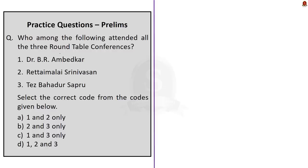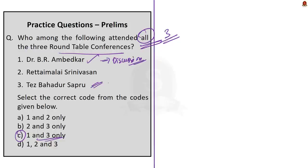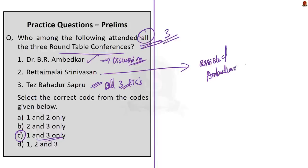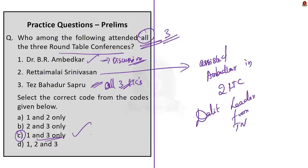The second question asks: who among the following attended all three Round Table Conferences? The three names given are Dr. B. R. Ambedkar, Rettaimalai Srinivasan, and Tej Bahadur Sapru. The answer is option C: one and three only. Dr. B. R. Ambedkar attended all three, as we just saw in the discussion. Tej Bahadur Sapru also attended all three conferences. Rettaimalai Srinivasan, an important Dalit leader from Tamil Nadu, assisted Dr. B. R. Ambedkar in the first two Round Table Conferences only. The answer is option C: one and three only.